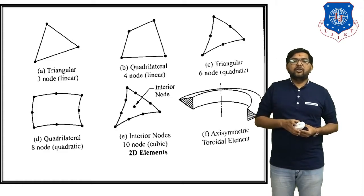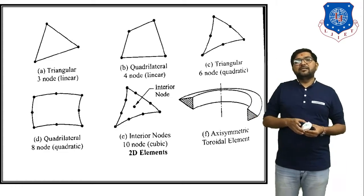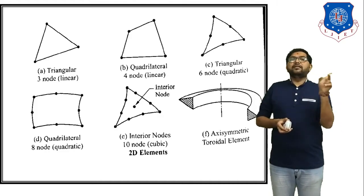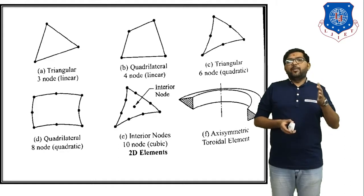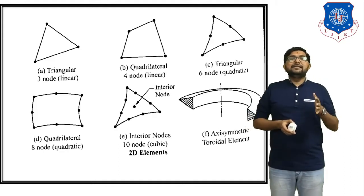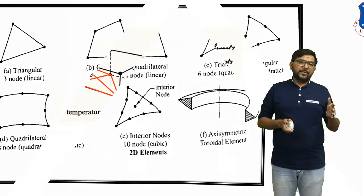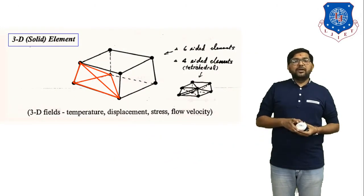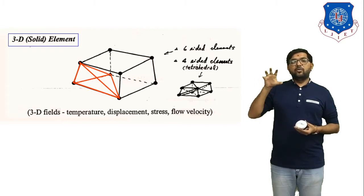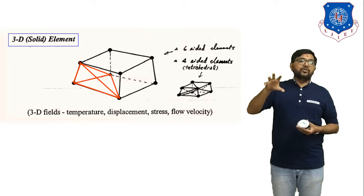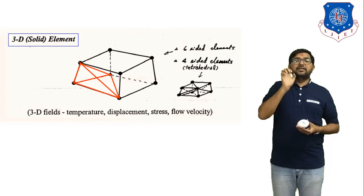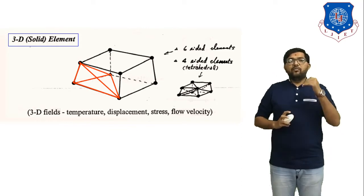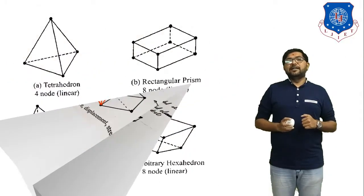The last 2D type is the axisymmetric toroidal element — the shape of the object is the same on both sides from the center line, so it is called an axisymmetric object. These are all examples of 2D elements. Next is the 3D solid element. Examples include temperature, stress, and flow velocity, all considered in one figure. That is why it is called a 3D solid element. More examples of 3D solid elements will be discussed in the next slide.